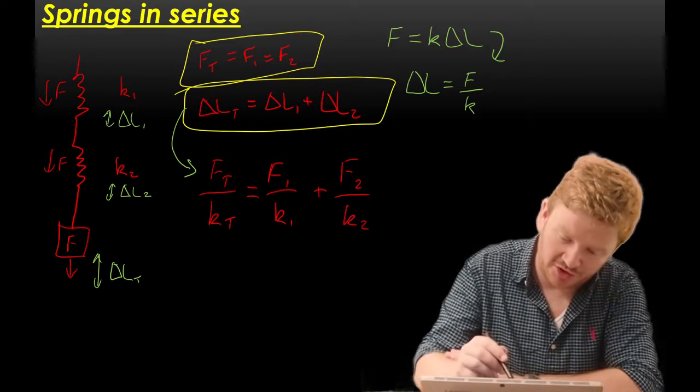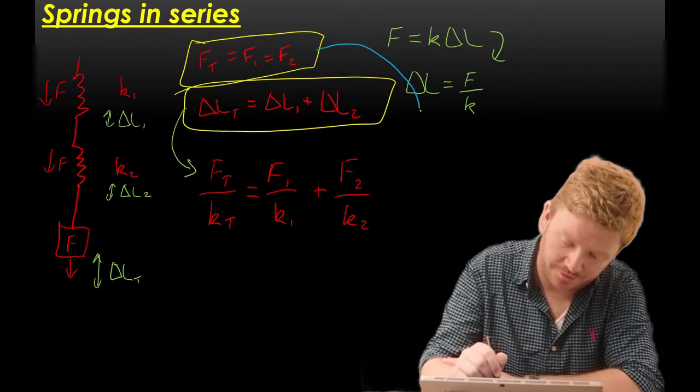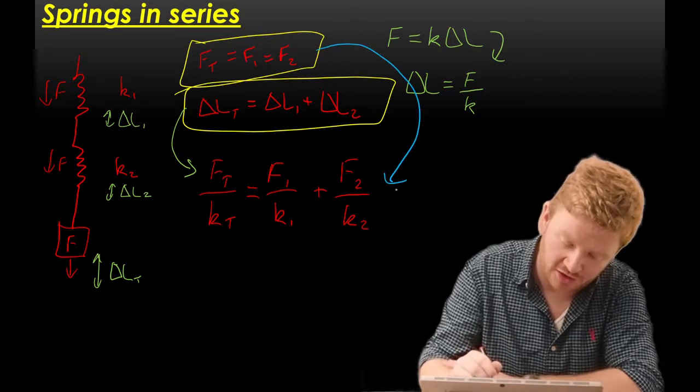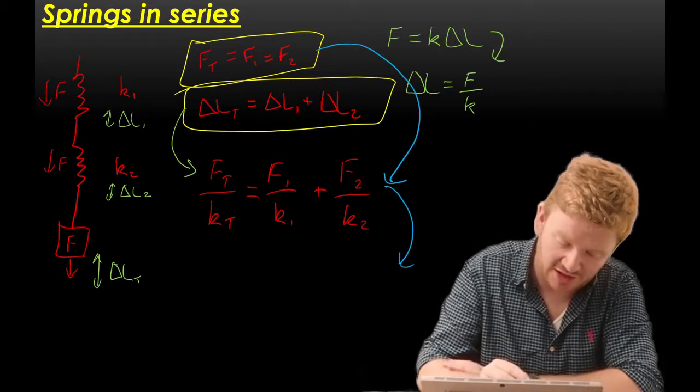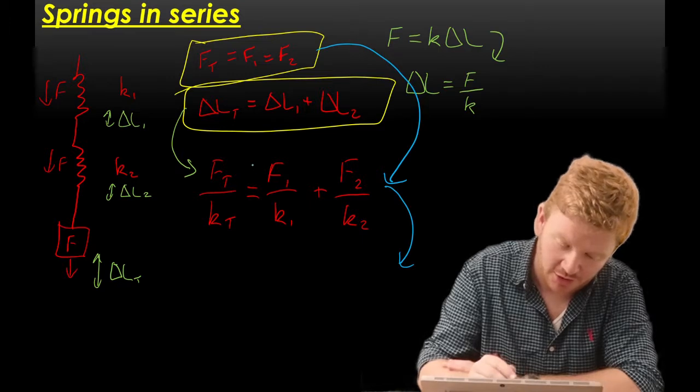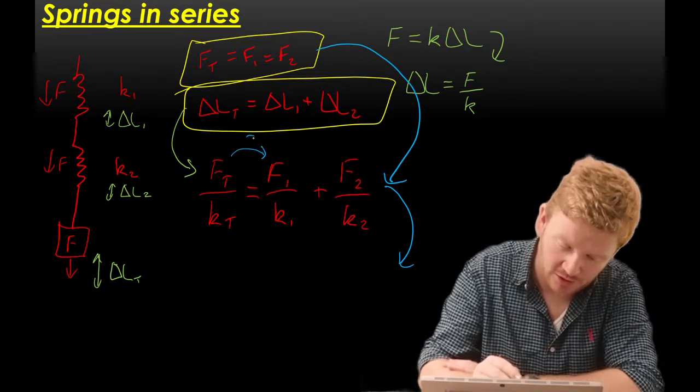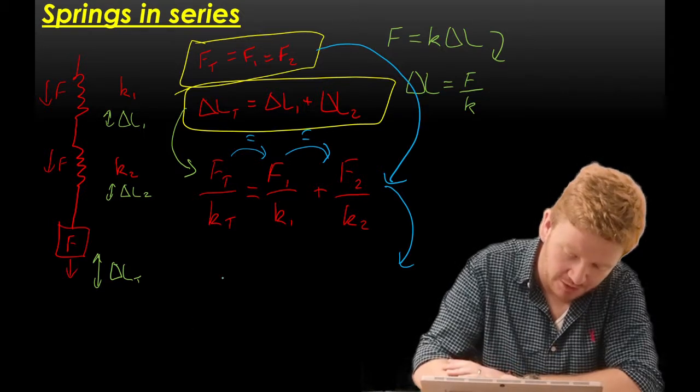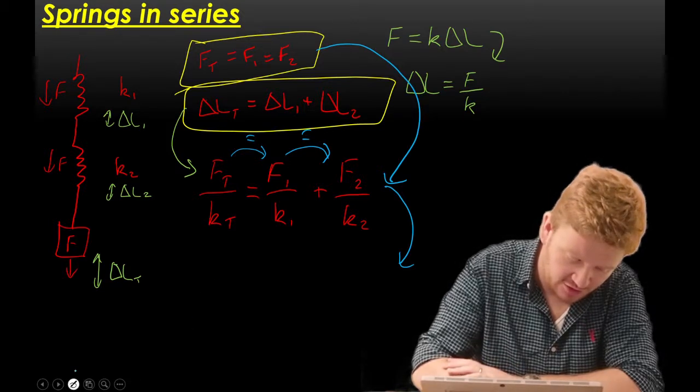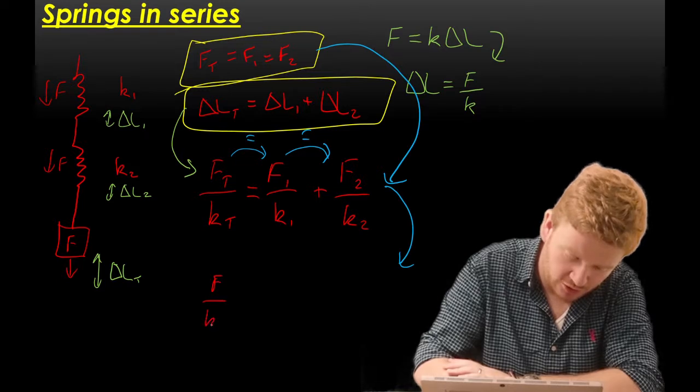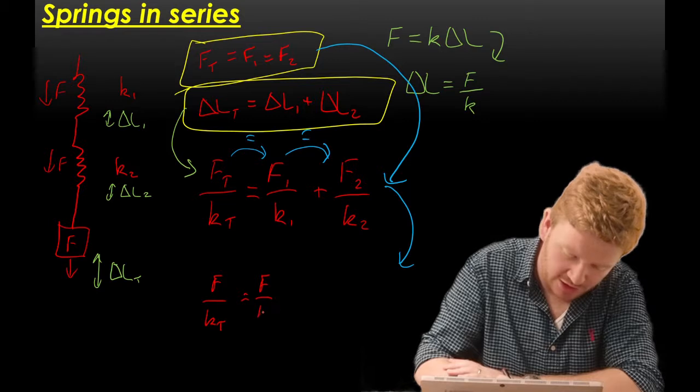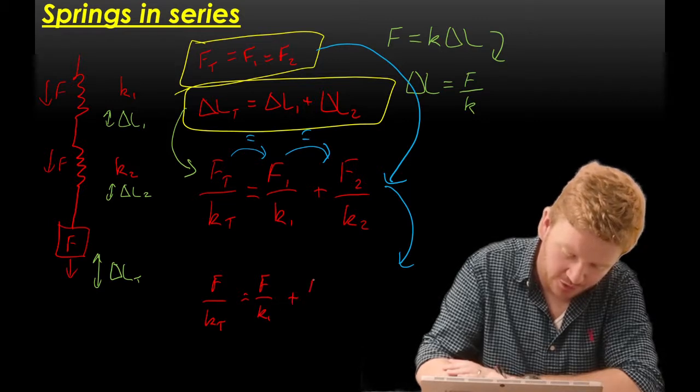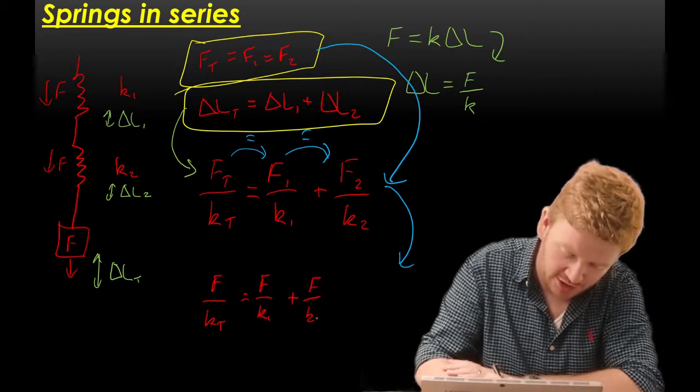Now, if I remember what we said earlier, we said that on all of these, the forces are the same. Ft is equal to F1, which is equal to F2. So what it becomes is force over kt is equal to force over k1 plus force over k2.